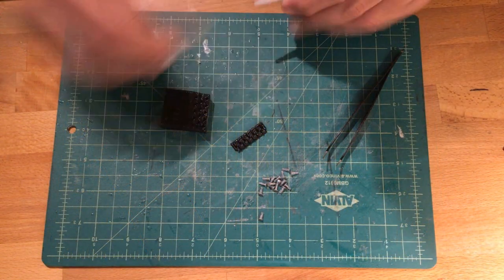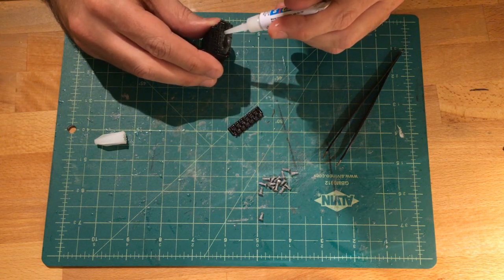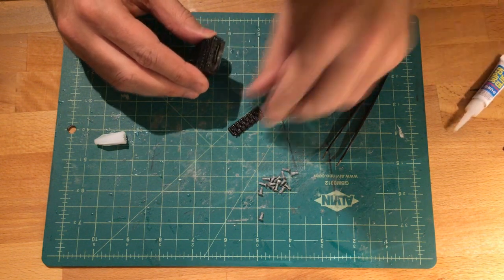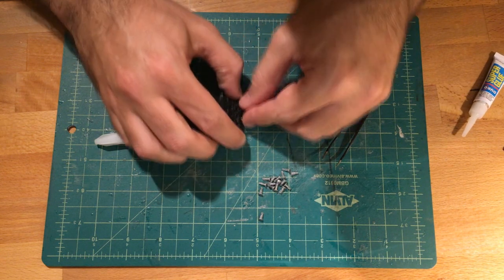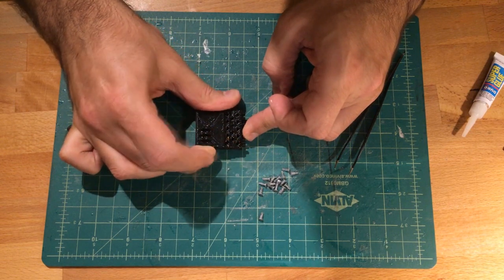So we'll prepare the body by first gluing the plug board onto the front. Add a little bit of super glue there. I'm going to put the plug board in and then just rest it against a flat surface like this so that it sets aligned.